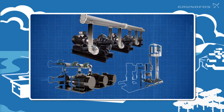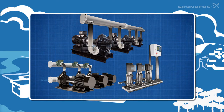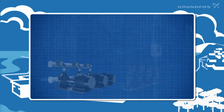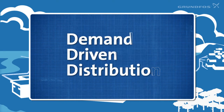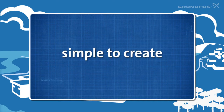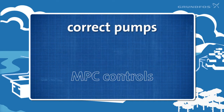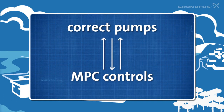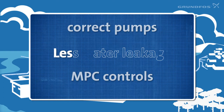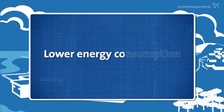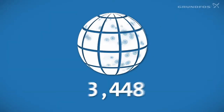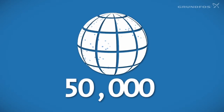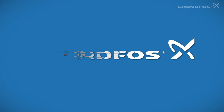Grundfos offers pump types to suit varying demands and scope. To calculate the potential savings, use the online calculator at the Grundfos.com site. Demand-driven distribution systems may be based on complex calculations, but they are simple to create. Based on the consumption profile, we select the correct pumps and combine them with MPC controls. You are then well on your way to less water leakage, lower energy consumption, and lower maintenance costs. Demand-driven distribution is based on proven technology used in more than 50,000 installations worldwide.